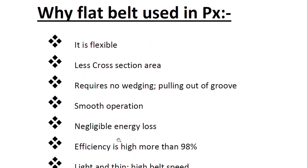The flat belt is flexible and has less cross-section area. It requires no wedging or pulling out of the groove. With V-belts, you need to pull and tension them, which requires maintenance. Over time the V-belt becomes loose and there are chances the belt will break. The flat belt provides smooth operation with no such issues.